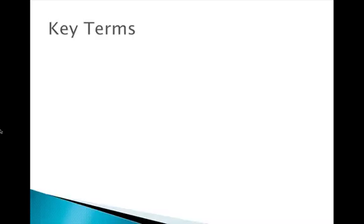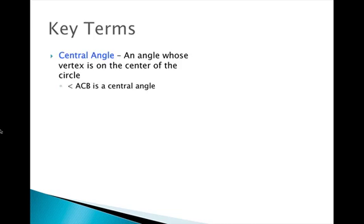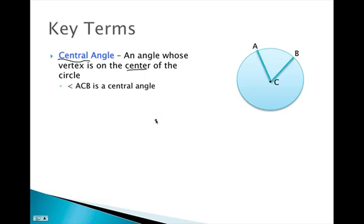We're going to go over some key terms about circles and specifically some arcs. Let's say we have circle C. A central angle in a circle is an angle whose vertex is on the center of the circle. So if we were to draw angle ACB right here, this is a central angle — its vertex is the same point as the center of this circle.